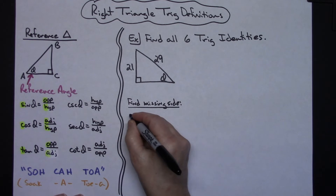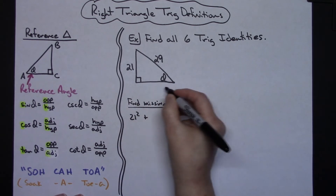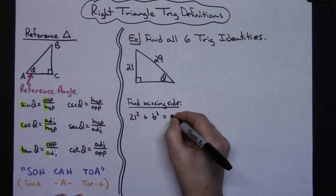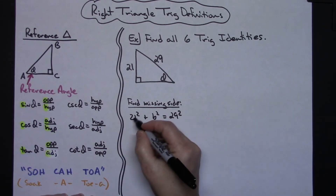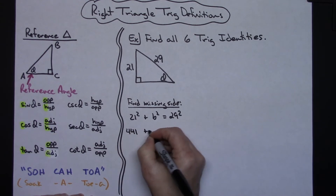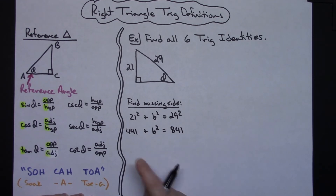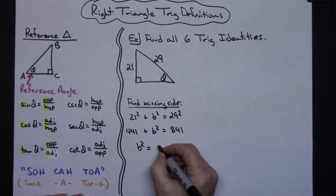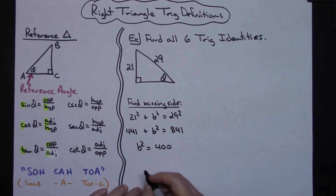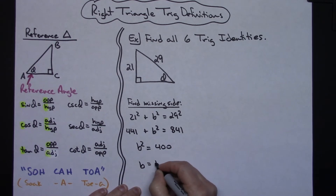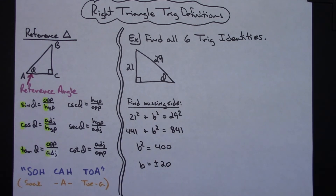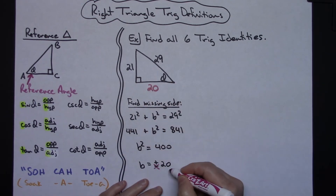So that's going to be 21 squared plus b squared equals 29 squared. Squaring out these numbers: 441 plus b squared equals 841. If I subtract 441 from both sides, b squared equals 400. Taking the square root of both sides gives plus or minus 20, but since I want a side of a triangle it can't be negative, so I throw out the negative 20. My missing side is 20.